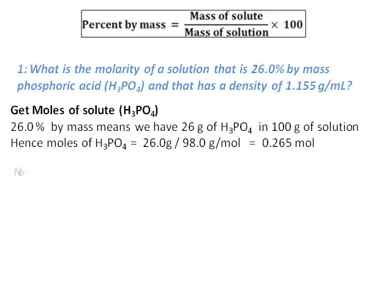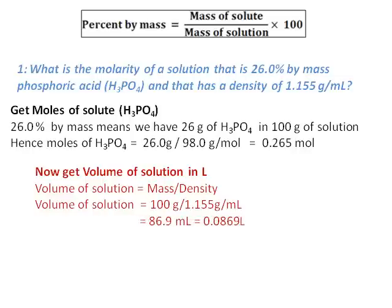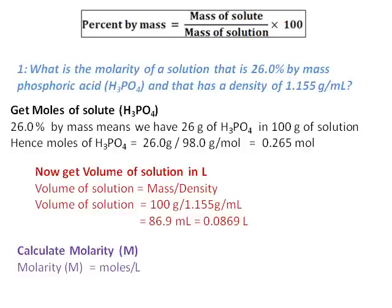We have the moles, so we need to get the volume of solution in liters. Volume equals mass divided by density: 100 grams divided by 1.155 gives a volume of 86.9 milliliters. Convert that into liters: 0.0869 liters. Once I have the moles and the volume, I can calculate molarity: 0.265 divided by 0.0869, giving a molarity of 3.05 M.